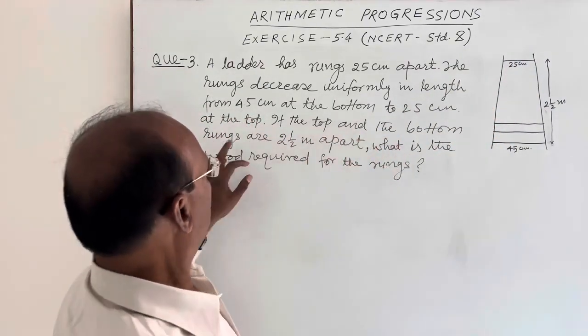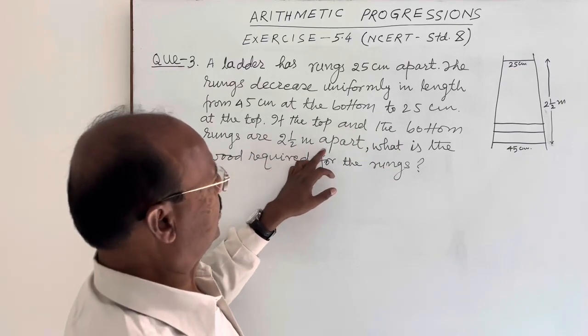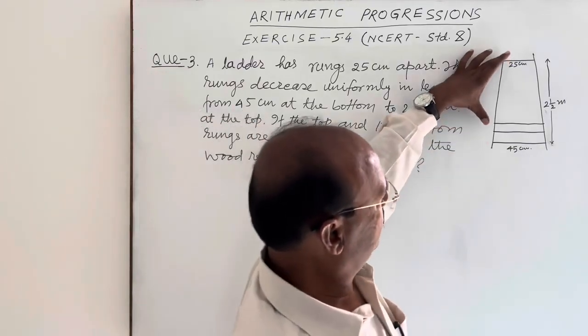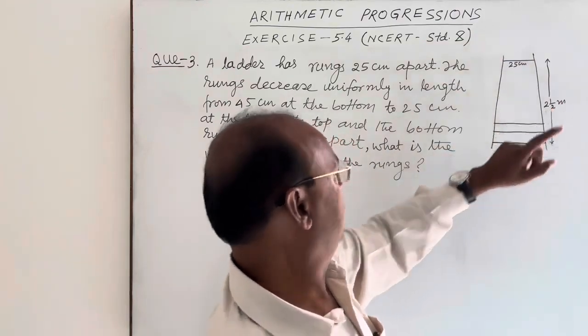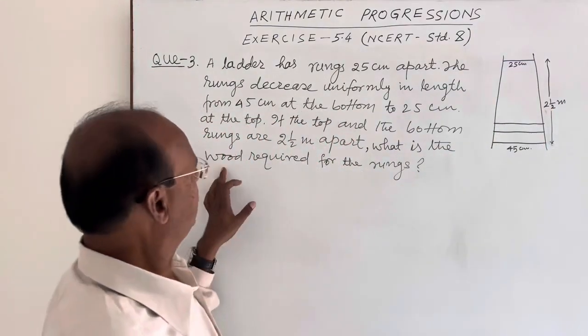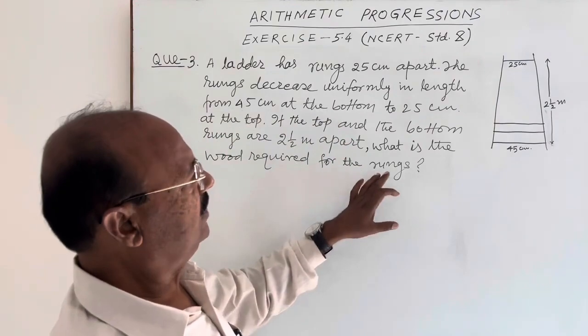If the top and the bottom rungs are two and half meter apart, distance between these rungs, top and bottom rungs, this distance is two and half meter apart. What is the wood required for the rungs?